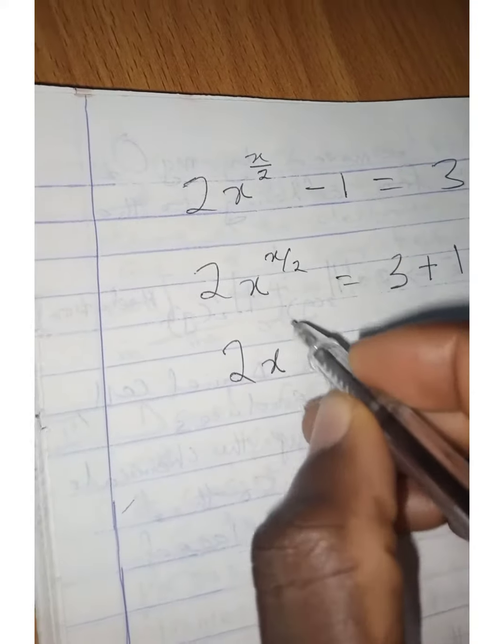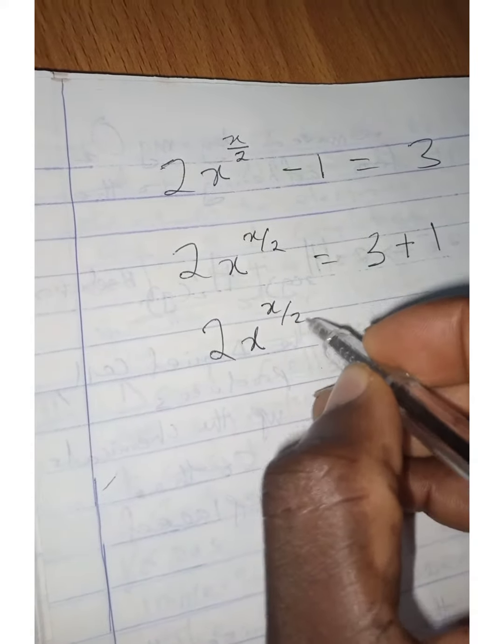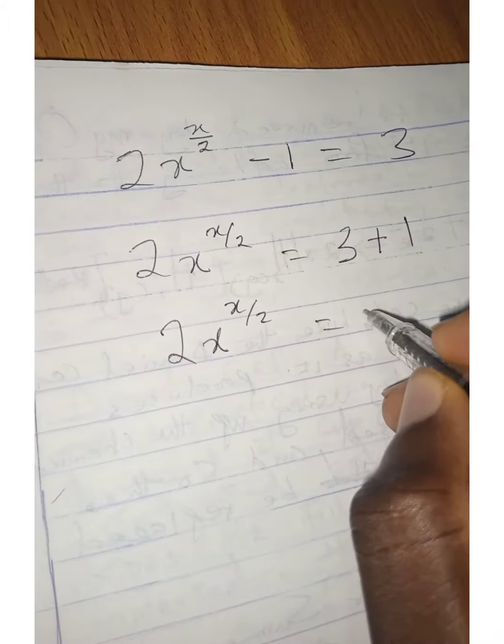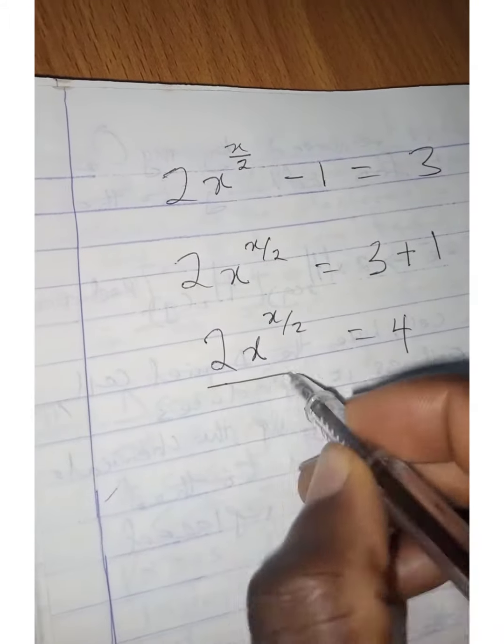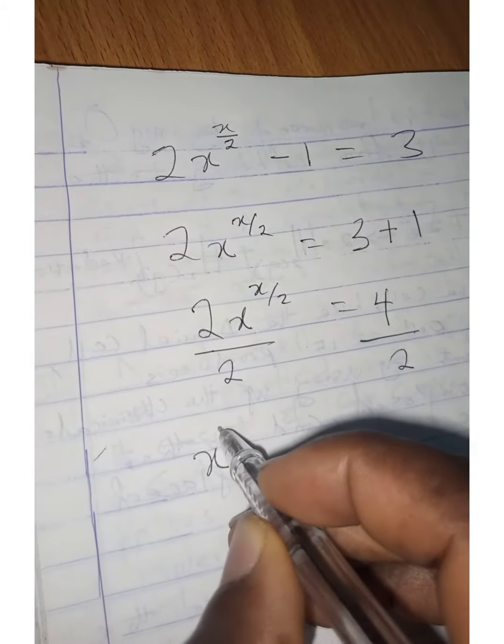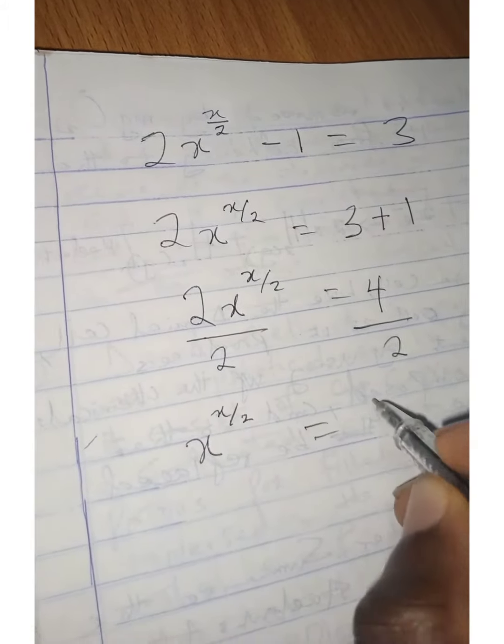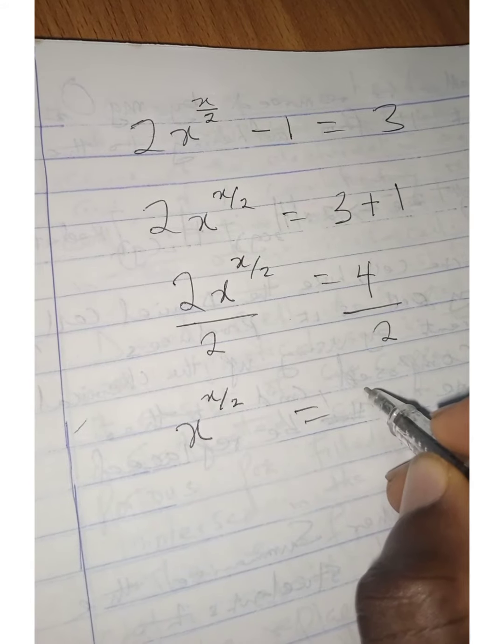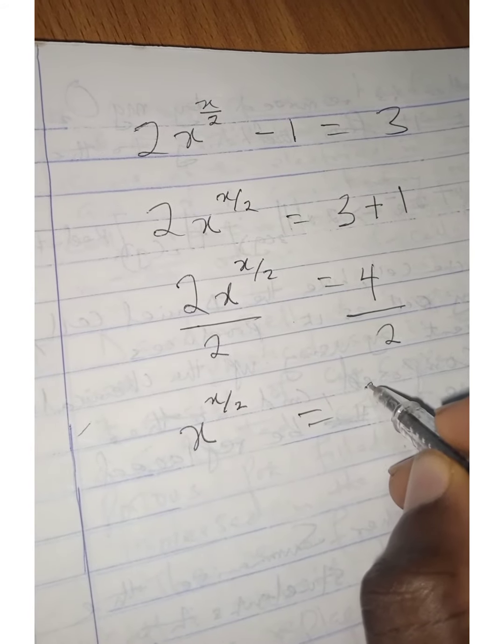So 2x raised to x divided by 2 equals 4. We can divide both sides by 2, giving us x raised to x over 2 equals 2.